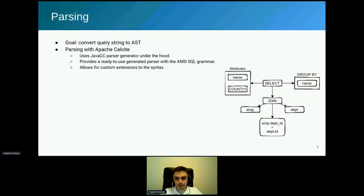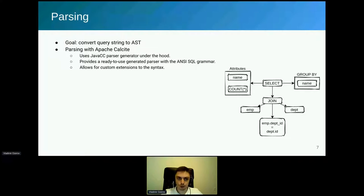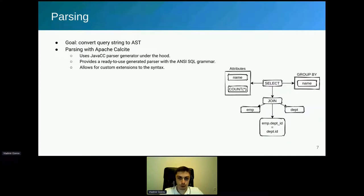Let's start with parsing. The goal of the parser is to take the query you submit to your engine and convert it into a syntax tree. This task is usually performed by parsers generated from a parser definition. In Apache Calcite, you may use the built-in parser or generate a parser with extensions specific to your backend. Under the hood, Apache Calcite uses the JavaCC parser generator, which helps generate the source code of your parser with very little cost. Usually, parsing a query with Apache Calcite takes just a couple of lines of code.